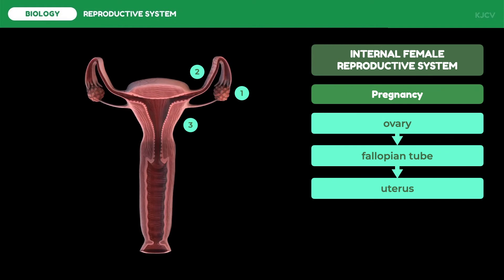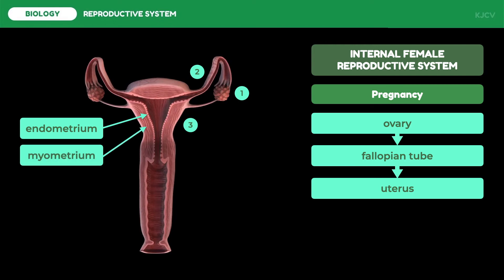The uterus is a hollow muscular organ that lies between the urinary bladder and the rectum. It has a very soft lining that holds the fertilized egg and nurtures it throughout its prenatal growth and development. The uterus has three layers: the endometrium is the innermost layer that maintains structural integrity and sheds during parts of the menstrual cycle; the myometrium is the middle and thickest layer containing smooth muscles responsible for uterine contractions; and the perimetrium is the outermost layer.